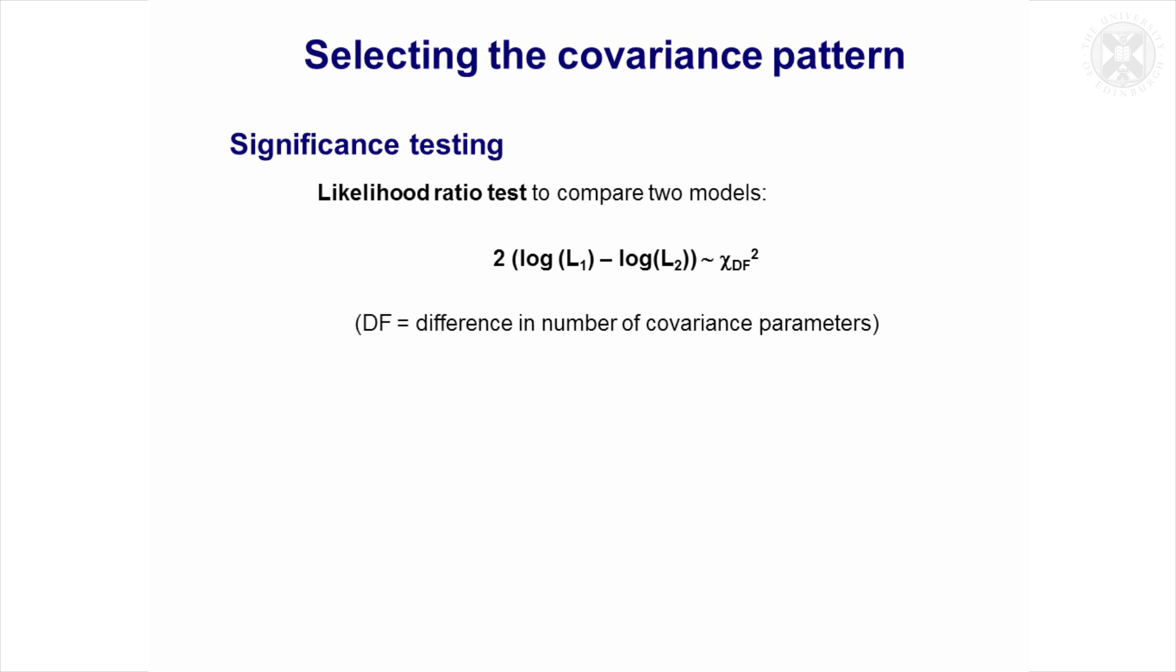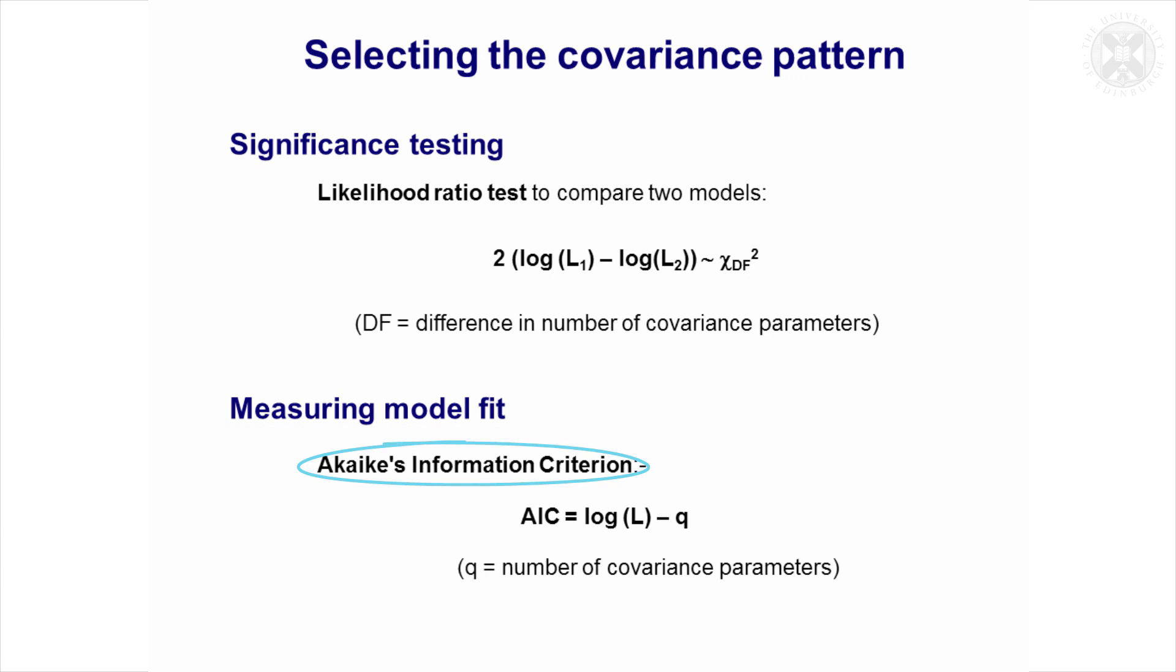Another easier approach that people sometimes use is to use a criterion that measures the model fit, but it also takes into account the number of parameters fitted in the model. Because the likelihood is always going to be higher if you've got more parameters in the model, so you want to take into account the number of parameters. This is a very crude way of doing that, known as Akaike's Information Criterion. It simply takes the log likelihood, which is a measure of model fit, and it takes off the number of parameters fitted in the model, which is given by q here.